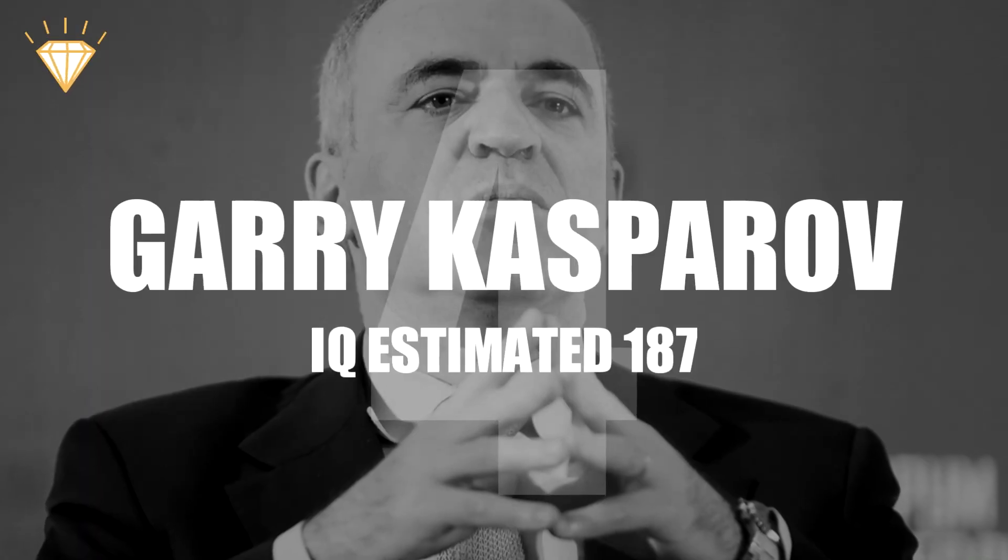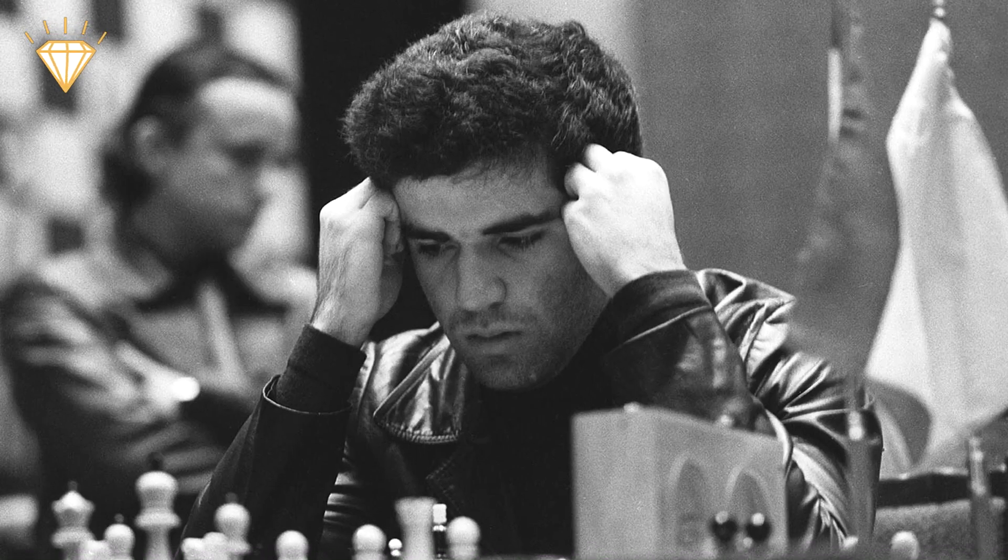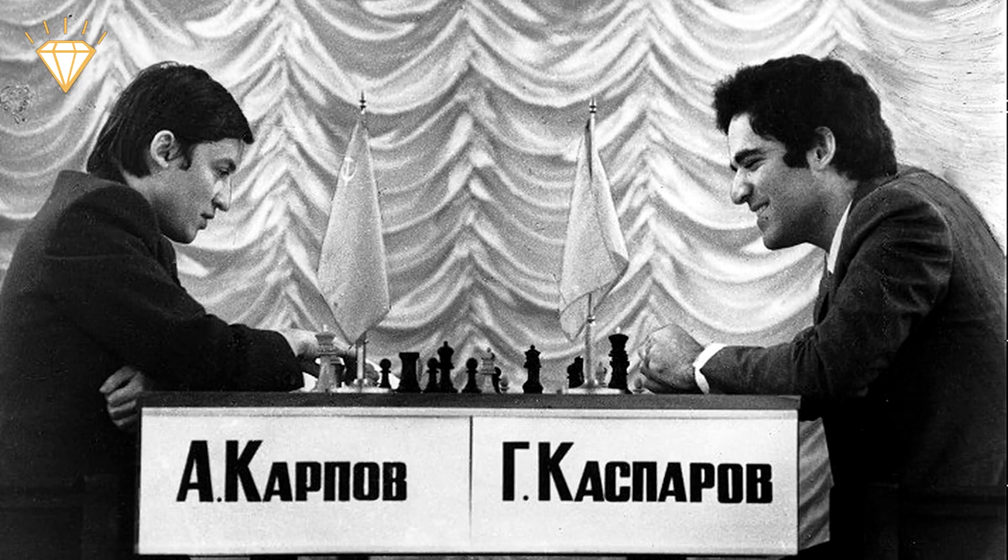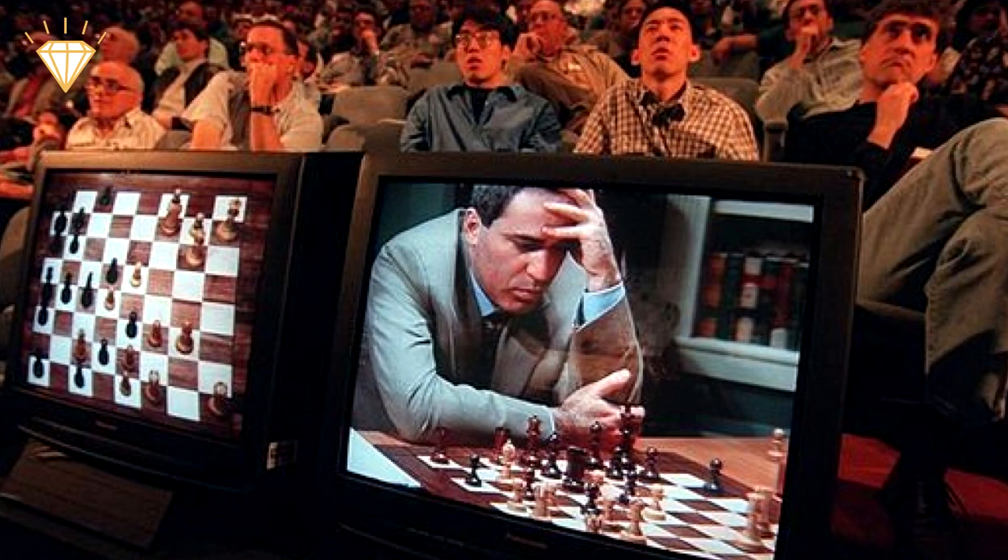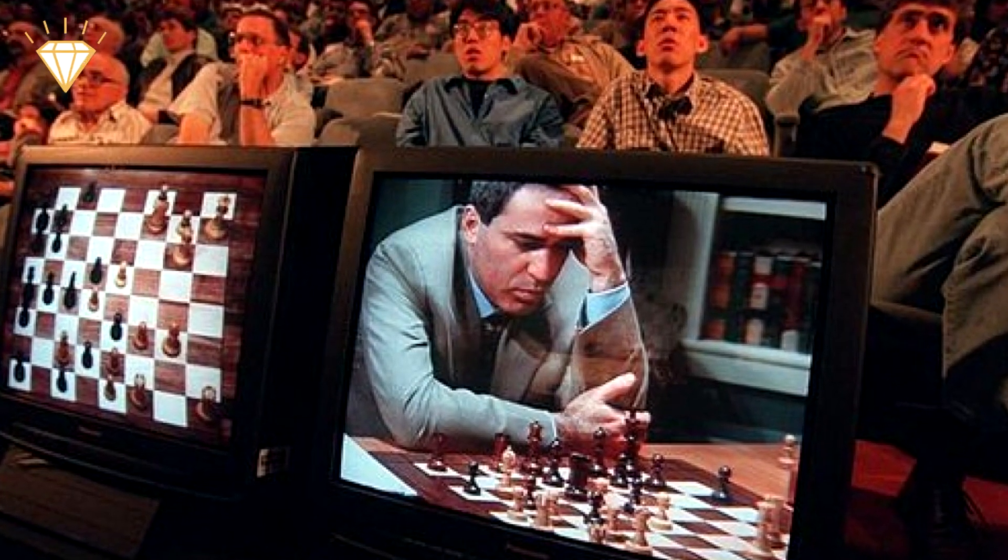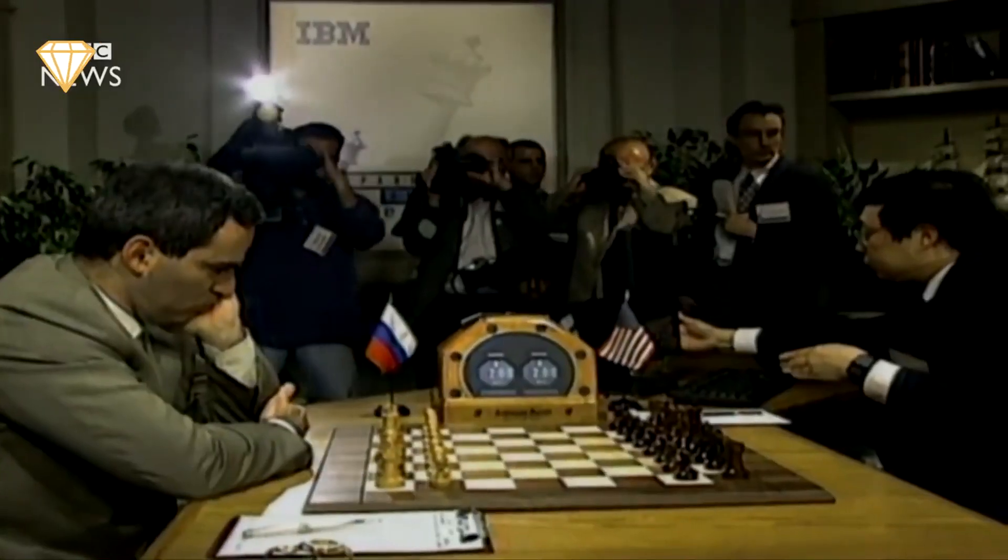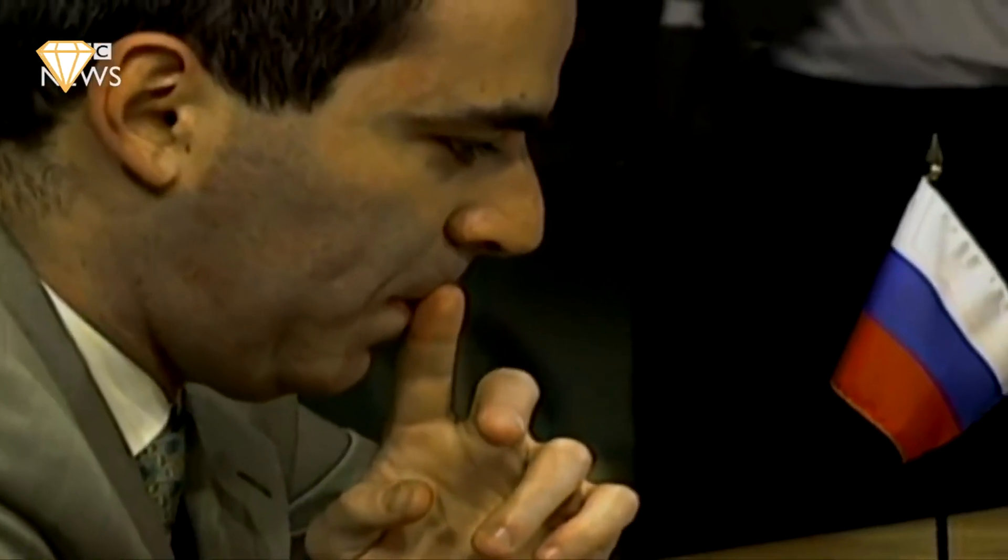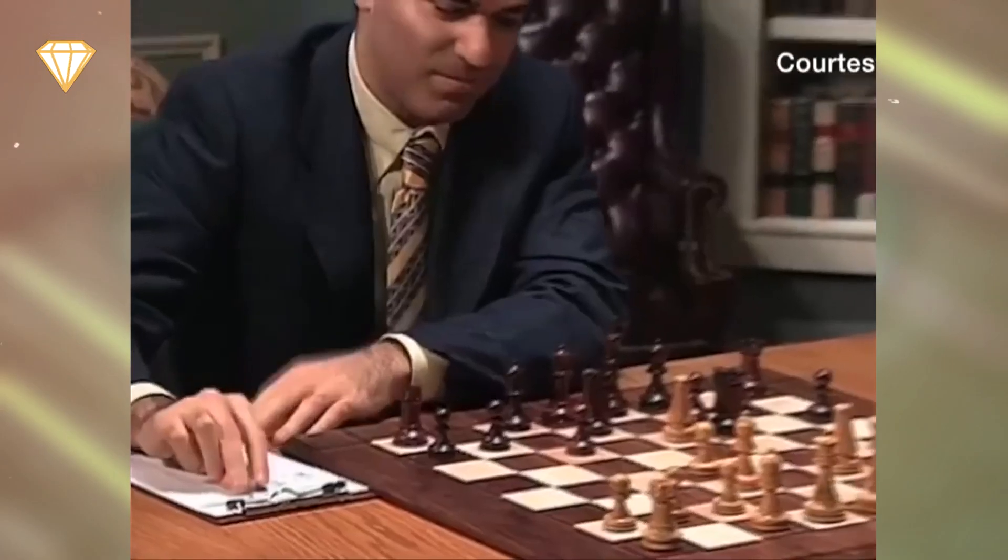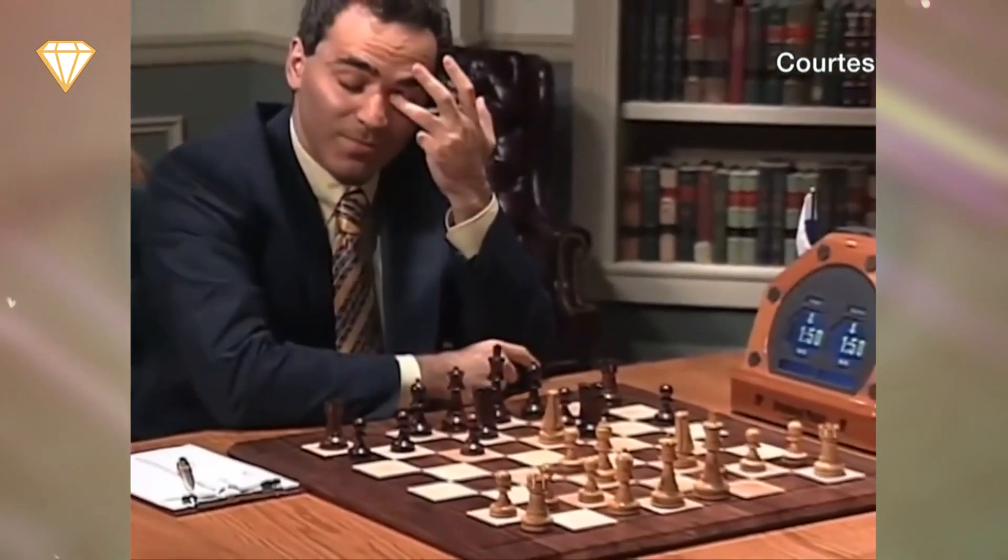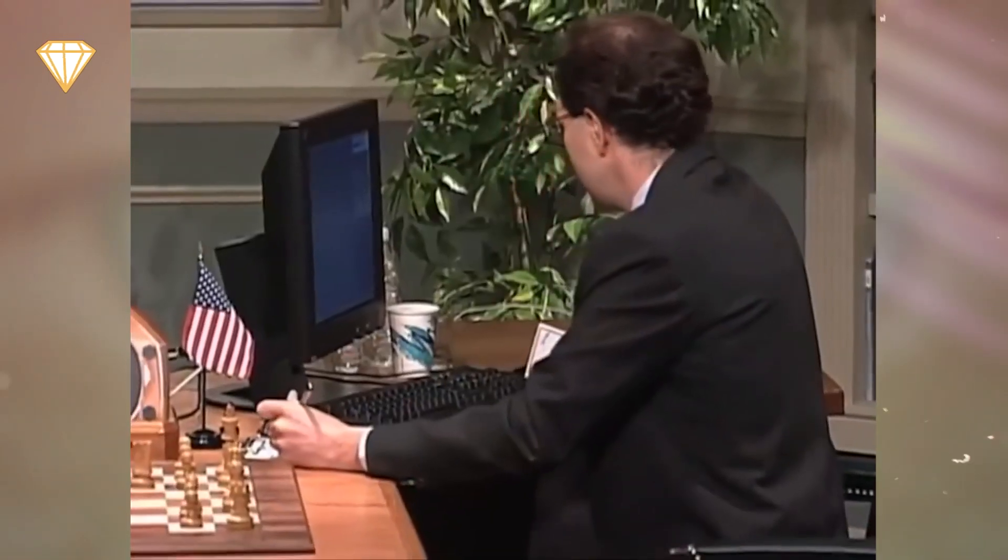Number 4, Gary Kasparov. Possibly the greatest chess player of all time, Kasparov was just 22 years old when he became the world chess champion in 1985 and was world number one for over 20 years. In 1996 Kasparov played a six game match against IBM's supercomputer Deep Blue. This computer was capable of searching through 200 million possible chess positions per second. Kasparov won the match, four games to two.